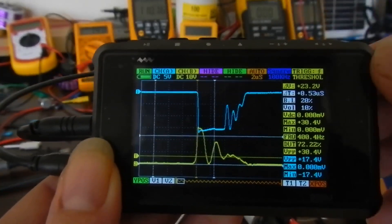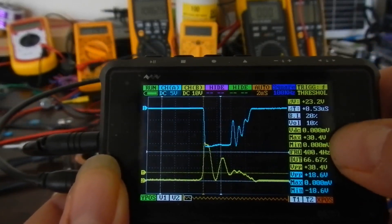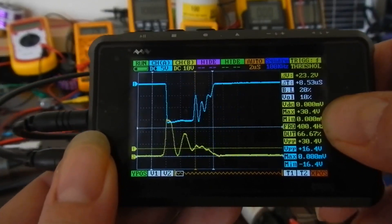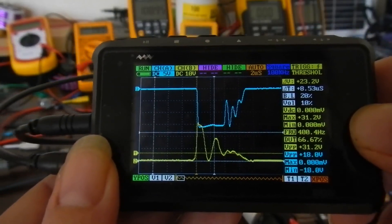Now that probe is set on the 10 times range. And as you can see my yellow line is set to 10 volts per division. So where it says 30 volts there, it's actually 300.